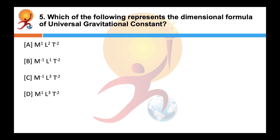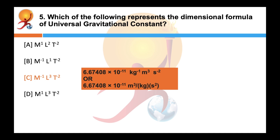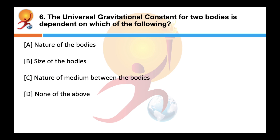Which of the following represents the dimensional formula of universal gravitational constant? Correct answer is C: M⁻¹L³T⁻². The universal gravitational constant G is a scalar quantity represented as 6.67408 × 10⁻¹¹ cubic meters per kg·s². The value of G is the same throughout the universe and is independent of the nature of the bodies, size of the bodies, and the nature of the medium between the bodies.